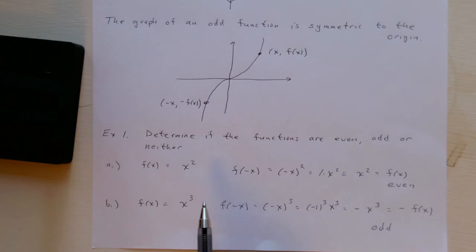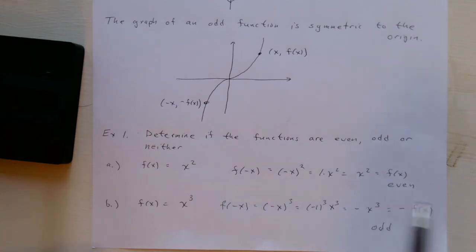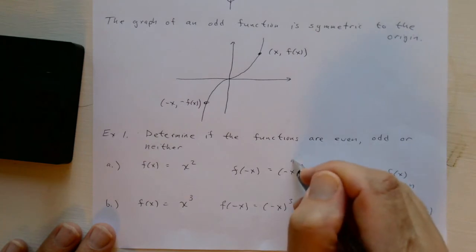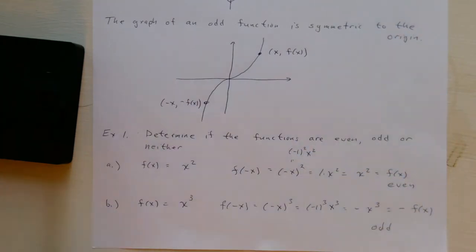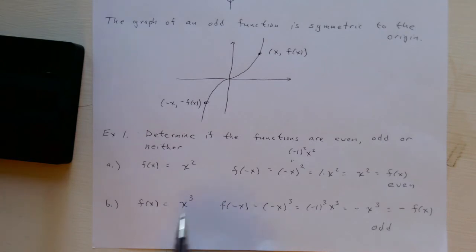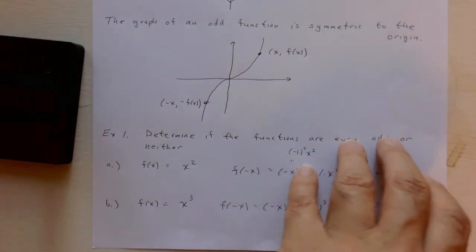There's a connection here with even and odd numbers: (−1) raised to an even power is just 1, and (−1) raised to an odd power is just −1. But don't rely too heavily on this, since most functions won't be this simple. Let's look at some more examples.